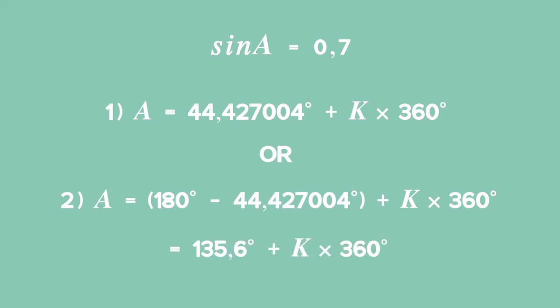So, 135.6 degrees plus K times 360 or 44.4 plus K times 360 are the two equations that give us the general solution for the equation. Sine of A is equal to 0.7.